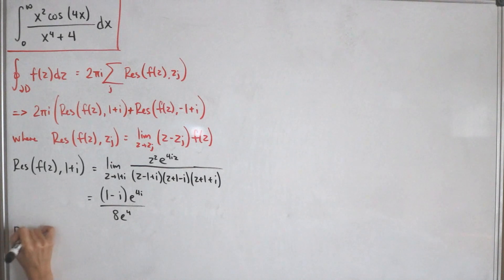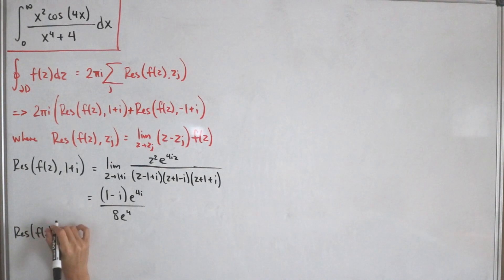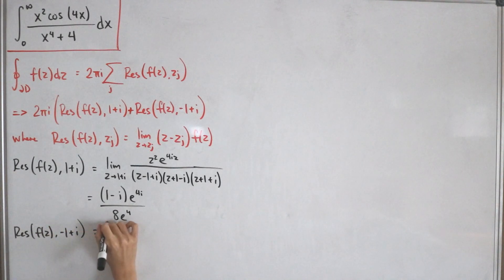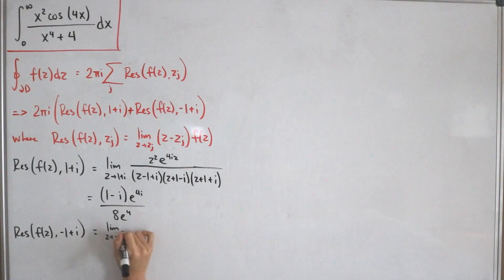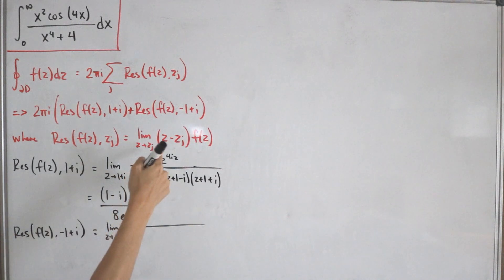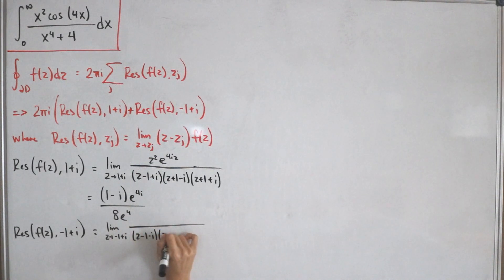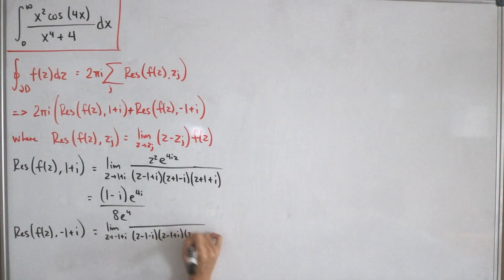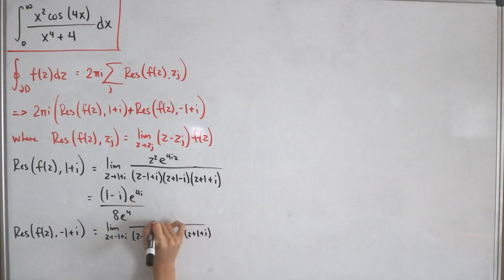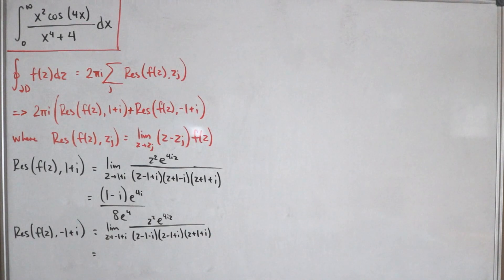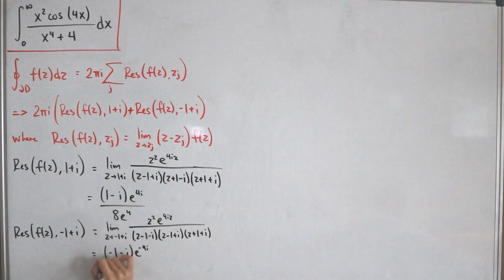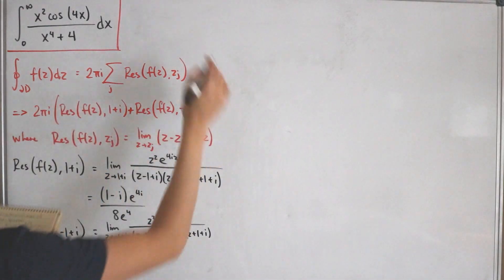For the second residue, Res(f, −1+i): we take the limit as z → −1+i, cancelling the corresponding factor from the denominator. After simplifying, this yields (−1−i)·e^(−4i) divided by 8·e^4.